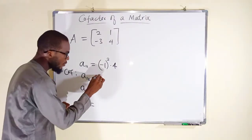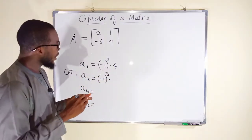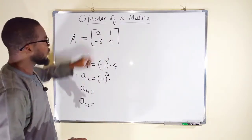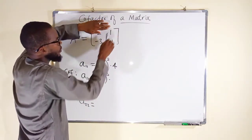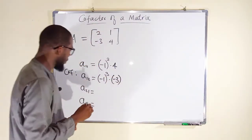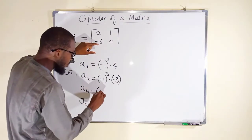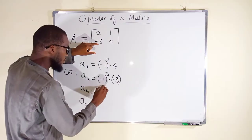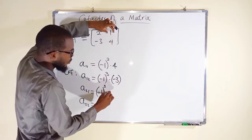For A12, we have negative 1 raised to the power of 1 plus 2, which is 3, multiplied by the minor. Deleting the row and column of A12 leaves negative 3. For A21, the second row first column element, we have negative 1 raised to the power of 2 plus 1, also 3, multiplied by the minor. Deleting that row and column leaves only 1.